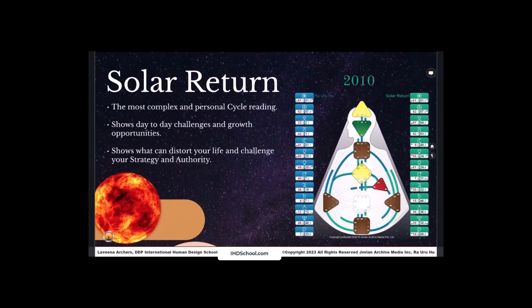But every single year, you're going to have a solar return up until you die. And these forms are terminal. The solar return is the most complex and personal cycle reading that you can give every year. It's the most important, according to Ra. It shows us the day-to-day challenges and growth opportunities that you are going to encounter throughout that year.